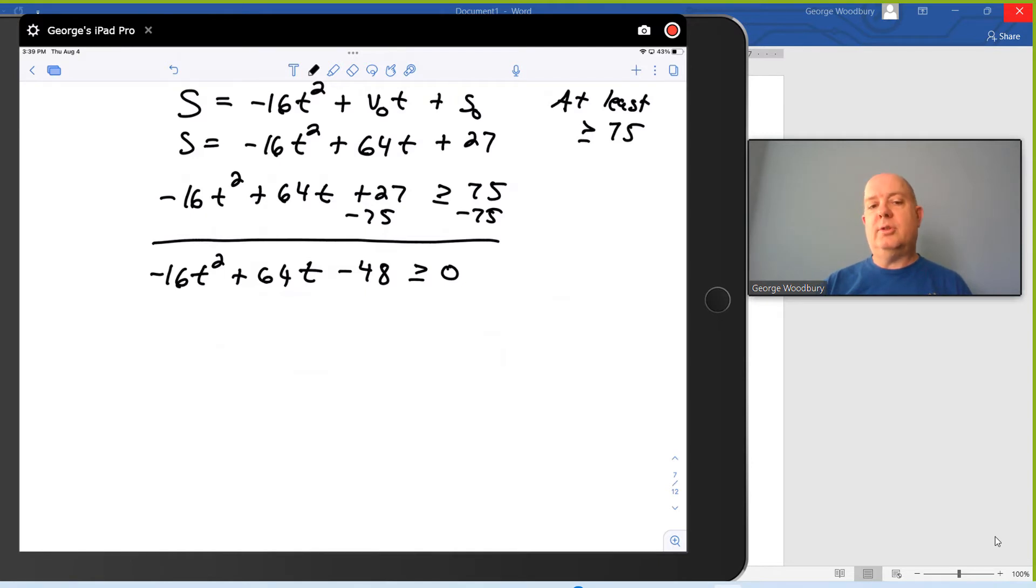Now we could try to go to the quadratic formula at this point, however, we should look for common factors and something that's important to know about the negative 16. The factors of 16 are 2, 4, 8, or 16. What we're hoping for is that we can divide 16 out of everything. If 16 doesn't work, then try 8. If 8 doesn't work, try 4. If 4 doesn't work, try 2. If none of those work, at the very least, you should factor out a negative 1. But here, 16 divides into 64 and 48, so I'm going to factor out a negative 16 first. And I get negative 16 times t squared minus 4t plus 3 greater than or equal to zero. At this point, I can factor that quadratic expression to be negative 16 times t minus 1 times t minus 3 is greater than or equal to zero.